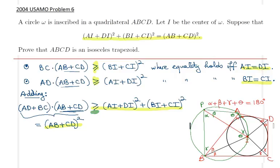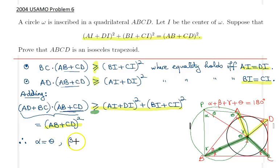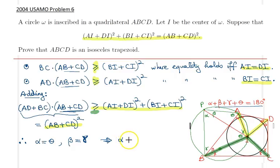Observing the picture again: AI = DI and BI = CI. This means we have two isosceles triangles, which establishes that angle alpha equals angle theta, and angle beta equals angle gamma.